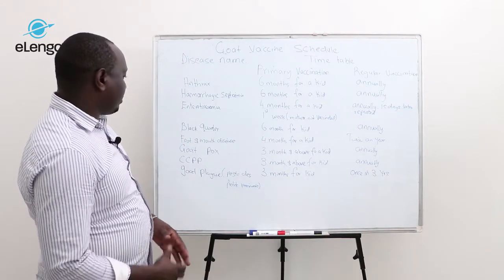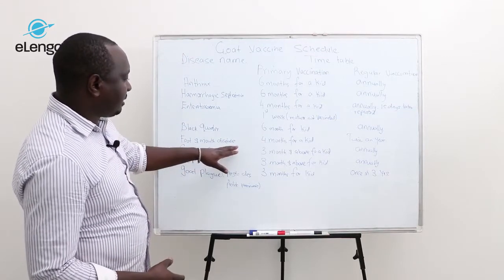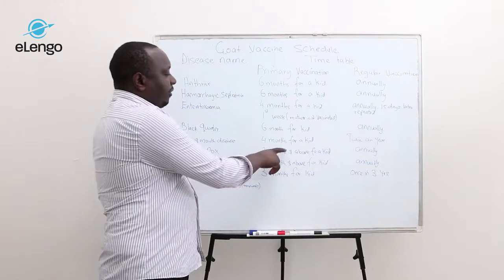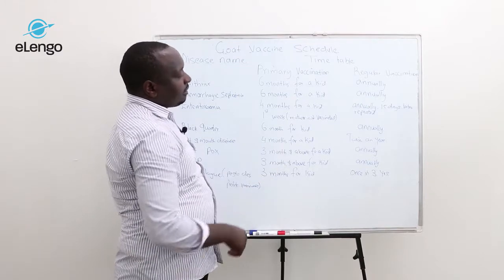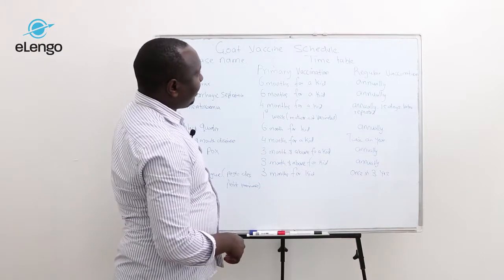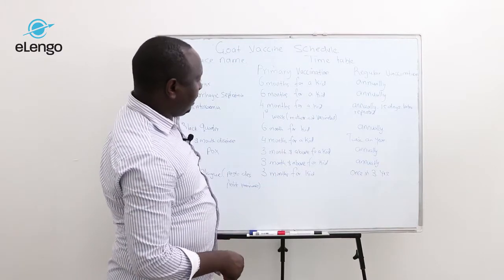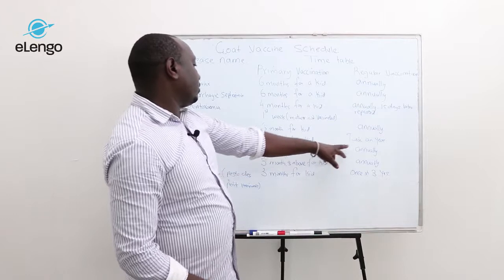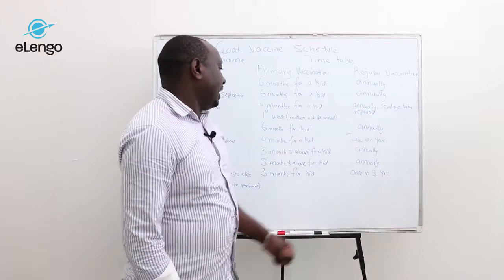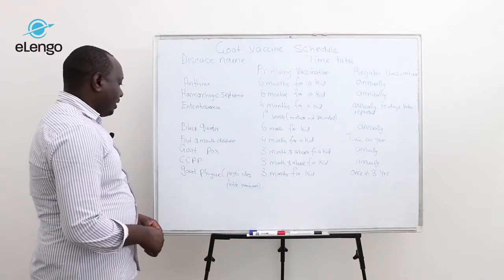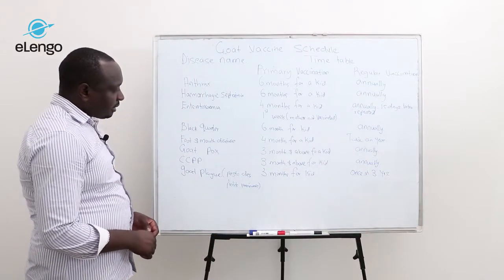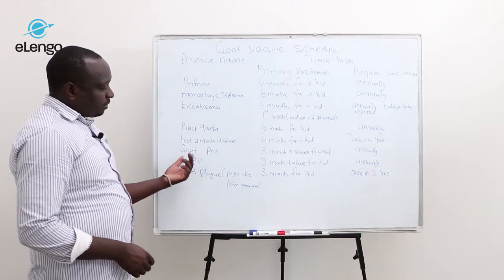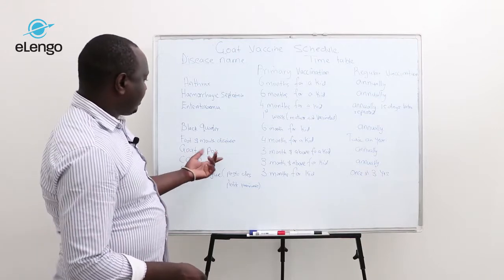Foot and mouth disease is a viral disease. Four months after birth, the kid is given the vaccine, and this one is done twice in a year. The other one is goatpox, which is not a common disease.